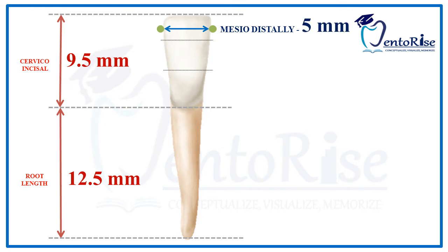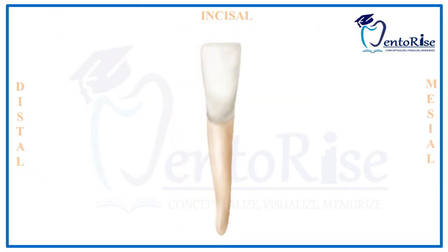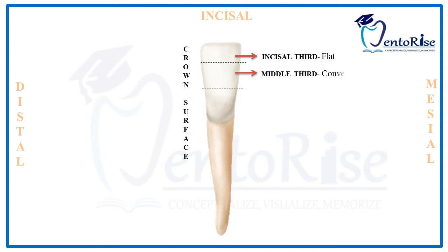The mesodistal dimension as measured from the cervical line is 3.5 mm. As we can observe from these dimensions, this tooth is narrower compared to the other teeth discussed so far. The incisal third for a permanent mandibular central incisor is flat, while the middle third of this tooth is convex.